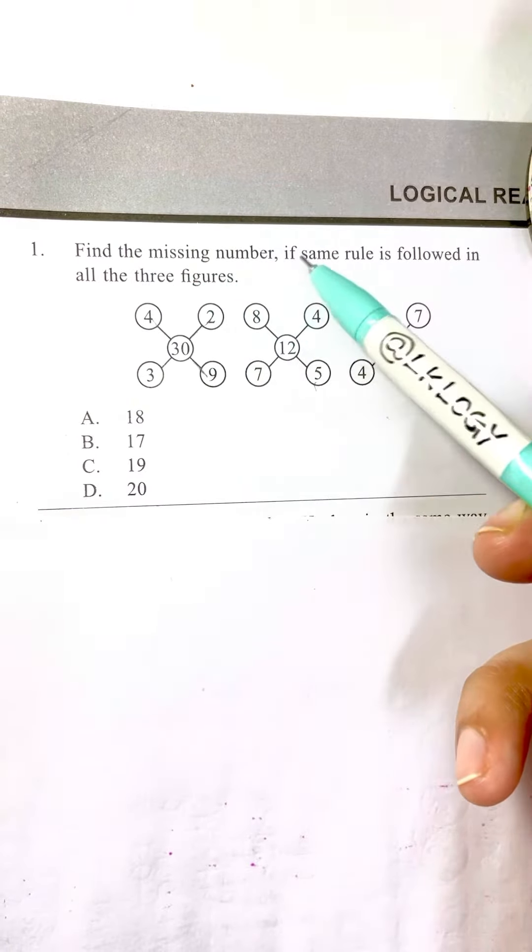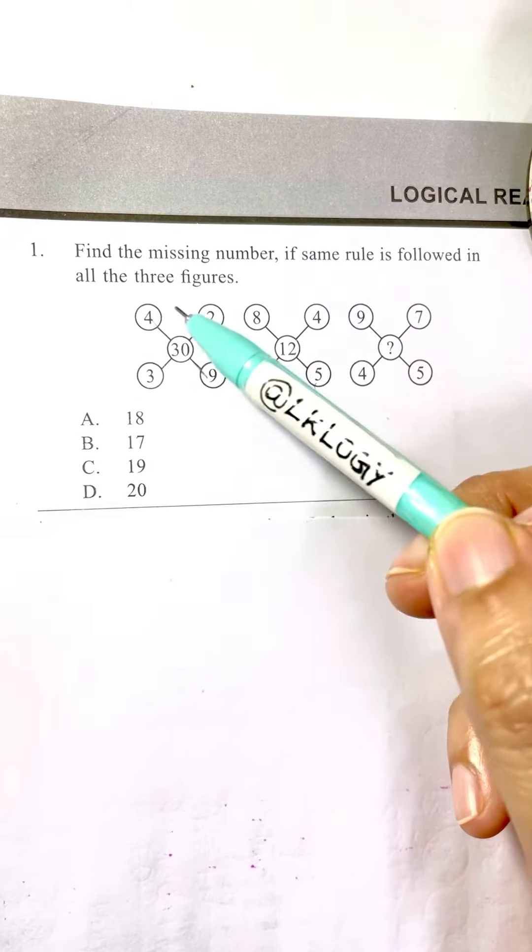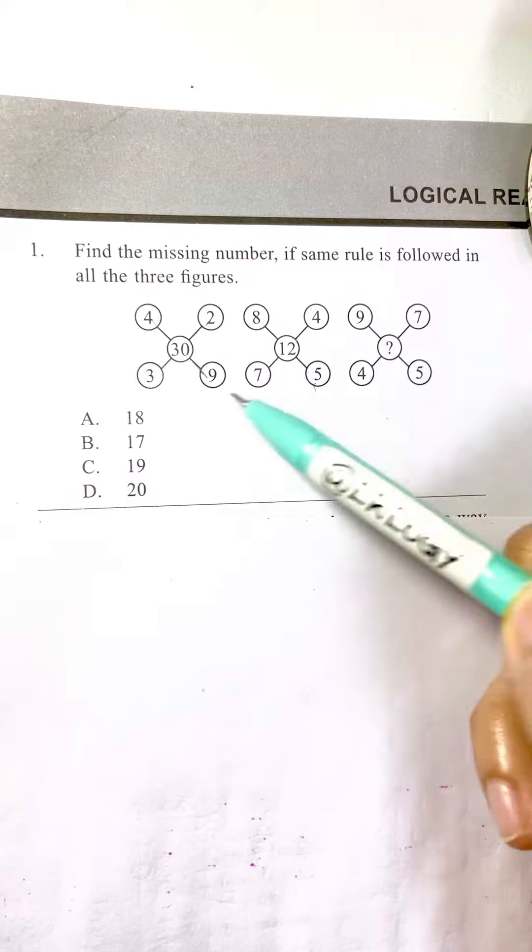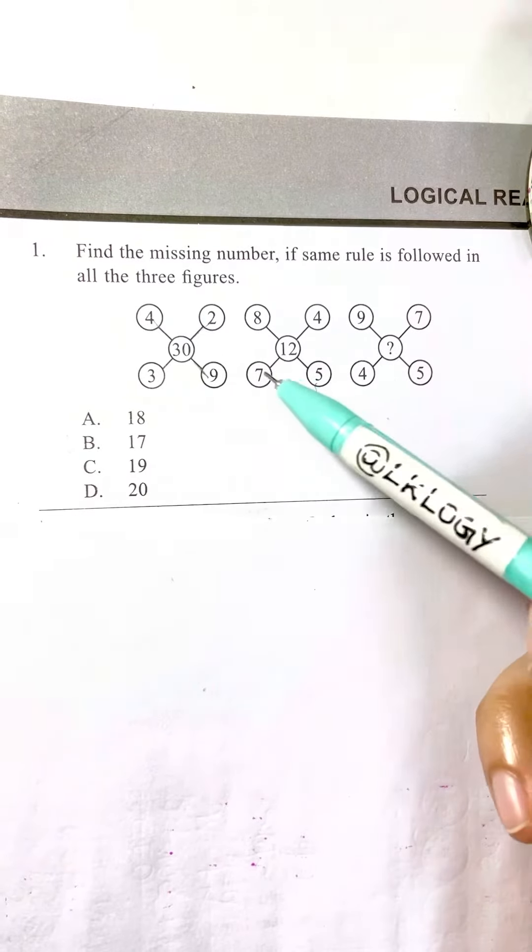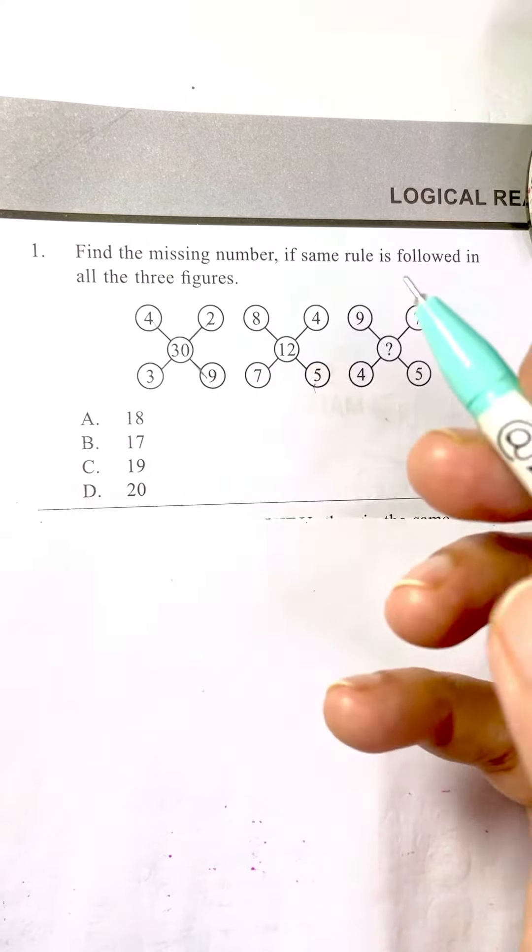Find the missing number if same rule is followed in all three figures. So in this one, this one, this one, what is common? How can we find out the relationship between them? Let's see.